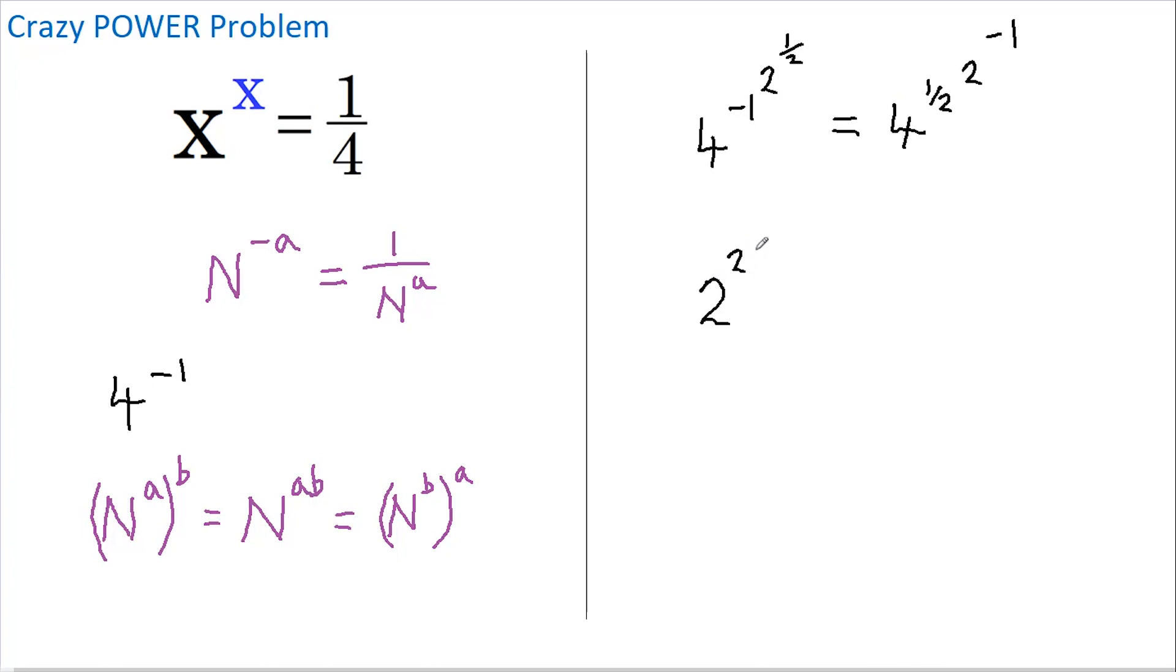So we end up with the square root of 4, which is 2, to the power of 2 to the power of negative 1. Also remember that taking the square root of a number can give us a positive or negative answer.